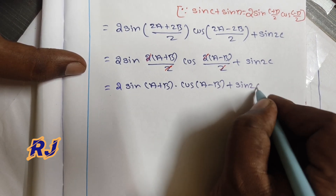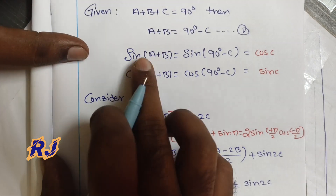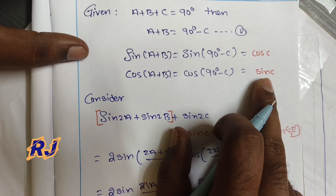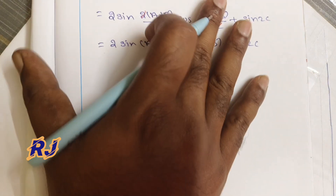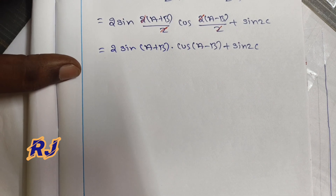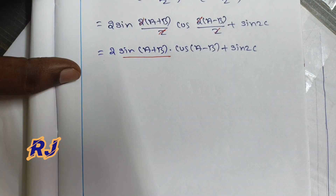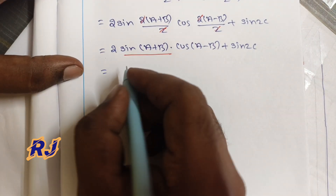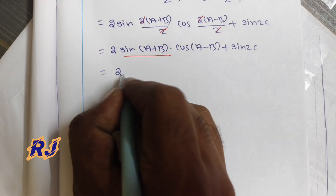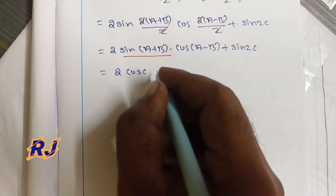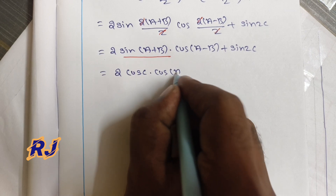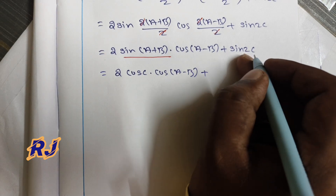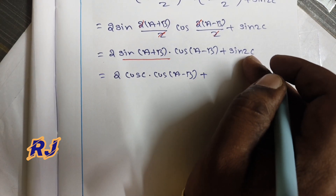Now we substitute sin(a+b) using our earlier result. Since sin(a+b) equals cos c, we replace sin(a+b) with cos c. This gives us 2 cos c into cos(a minus b), plus sin 2c. Next, we expand sin 2c using the double angle formula: sin 2c equals 2 sin c cos c.